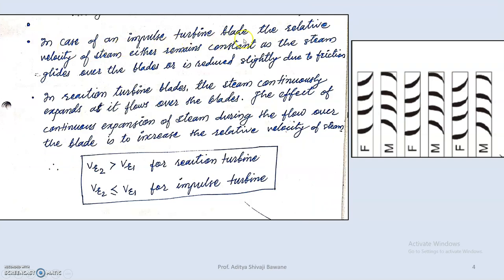In an impulse turbine, the relative velocity of steam either remains constant as the steam glides over the blades or is reduced slightly due to friction. In numerical problems for impulse turbines we studied that the relative velocity over the moving blade is reduced — the friction factor k is always 0.85 or 0.9 — due to which the relative velocity at outlet is less than the relative velocity at inlet.